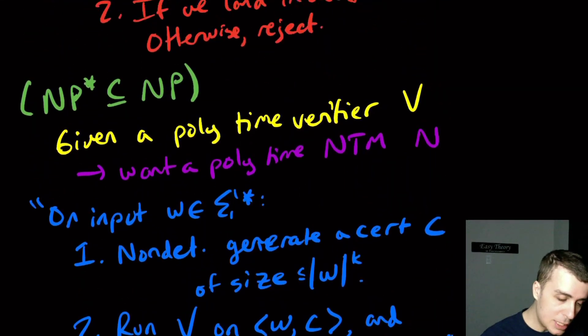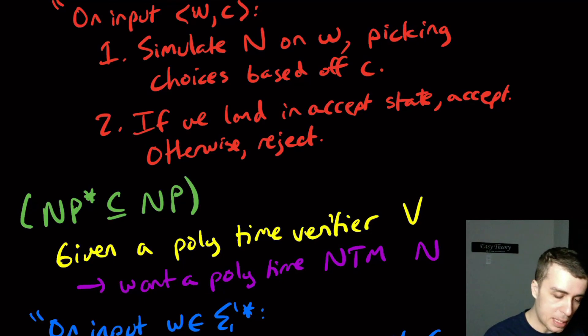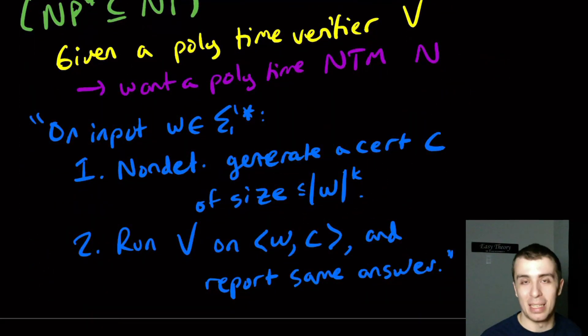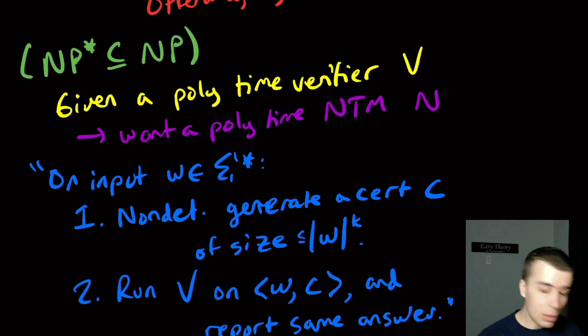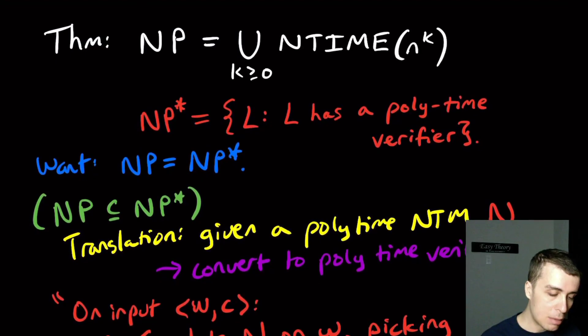And it's pretty easy to verify for both of these that it runs in a polynomial amount of time because the C here is polynomial in the size of W. And here we assert that the certificate size is polynomial. So both of the machines that we made are polynomial time and so therefore, we have proven what we wanted to do, which is that we have shown that the two different definitions of NP really are equivalent to each other.